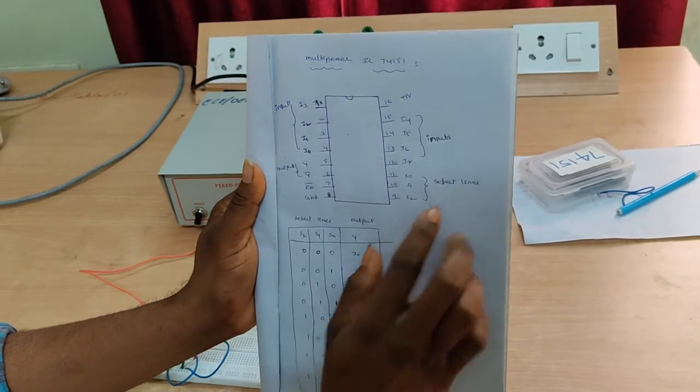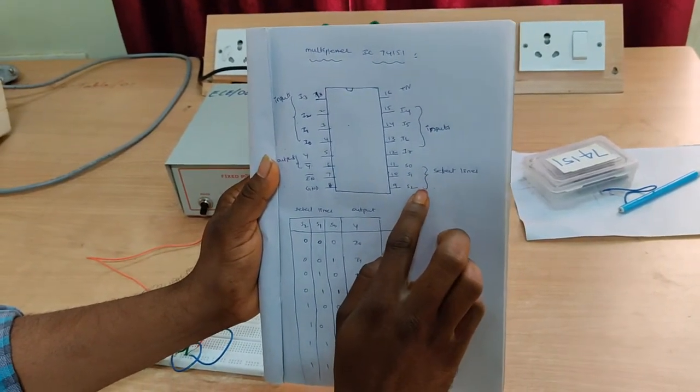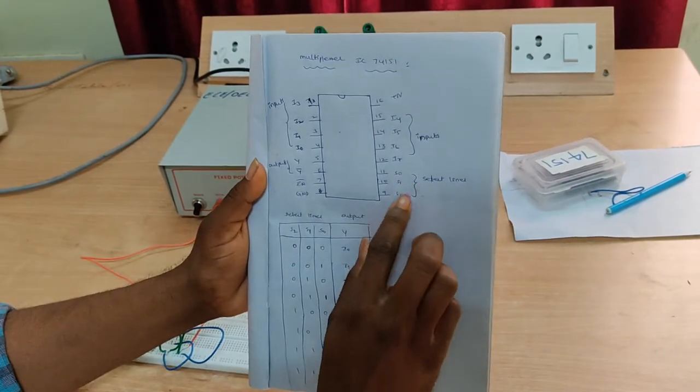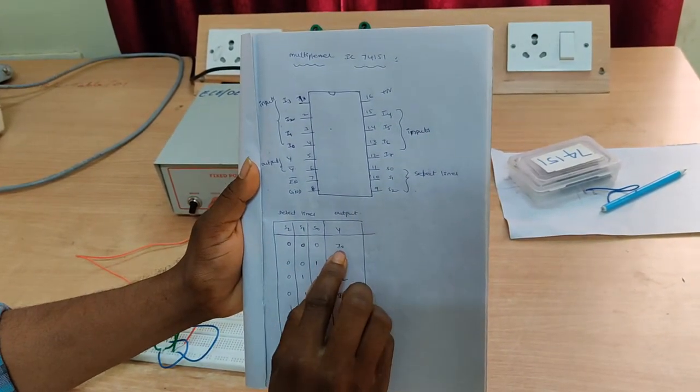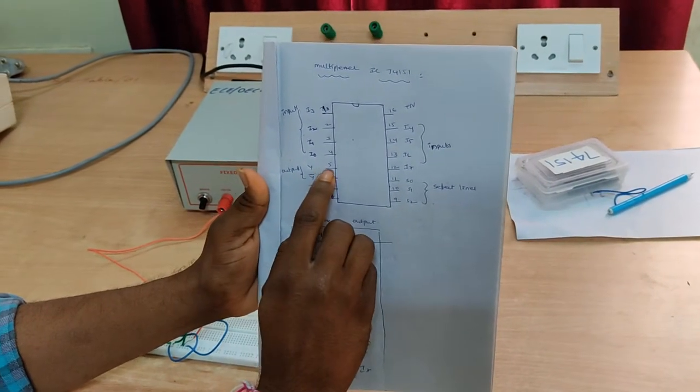So that means this 7th and 8th pins are both grounded. So here are the selection lines: S0, S1, S2. So if selection lines are triple 0, then Y is the I0. Here output is Y.